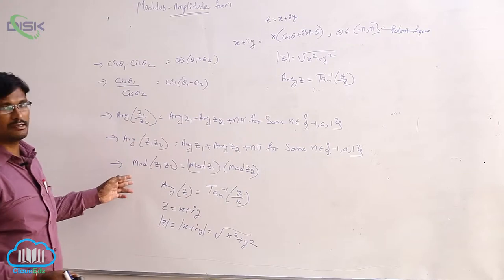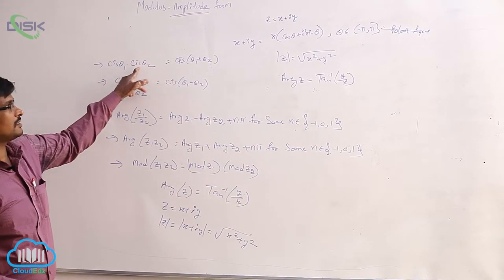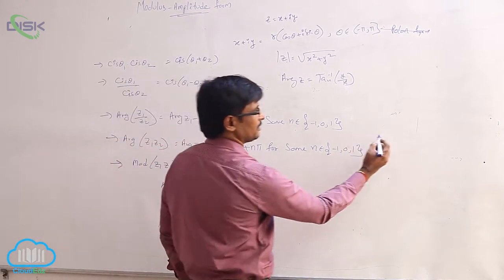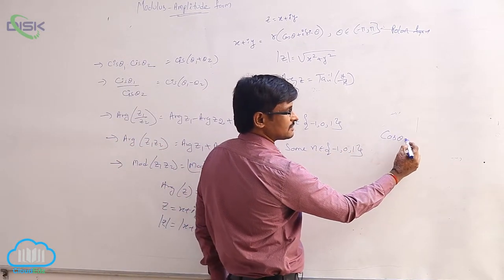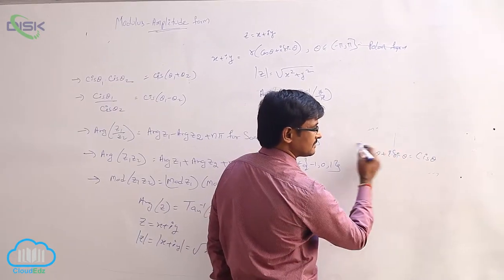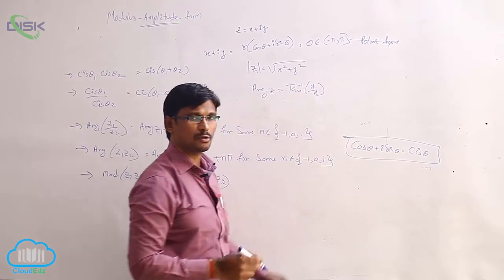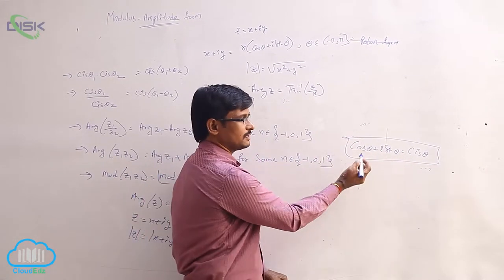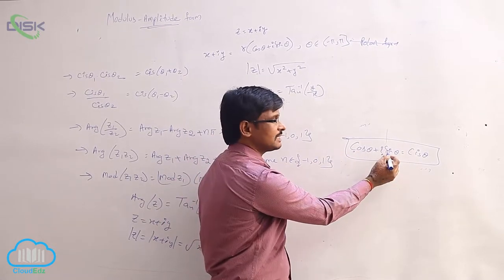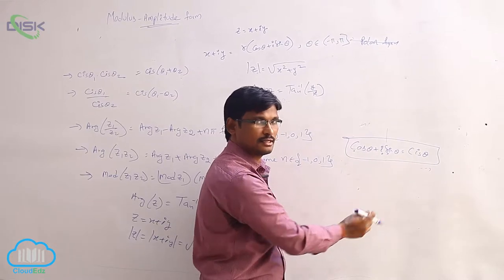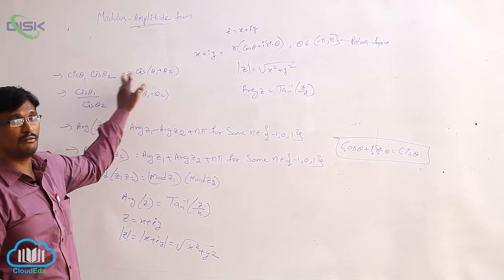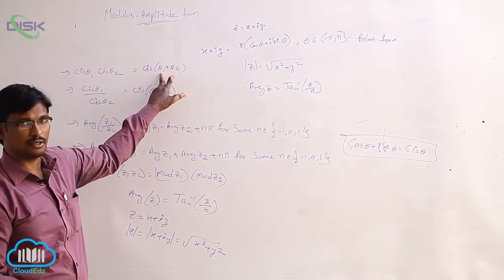For the property cis θ₁ · cis θ₂ = cis(θ₁ + θ₂): cis θ means cos θ + i sin θ, where C stands for cosine, I for imaginary, and S for sine — hence cis θ.